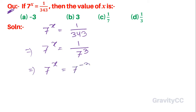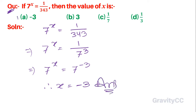Therefore, 7 to the power x is equal to 7 to the power minus 3. Since the bases are identical, x is equal to minus 3. So option A is the correct answer.